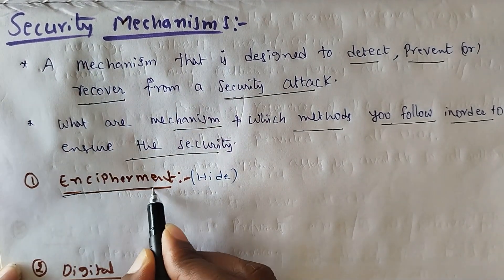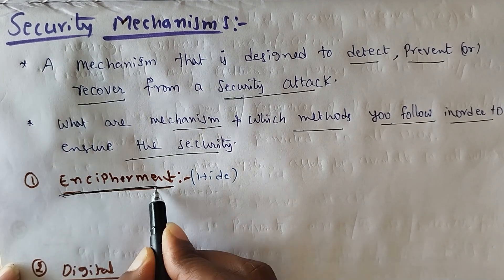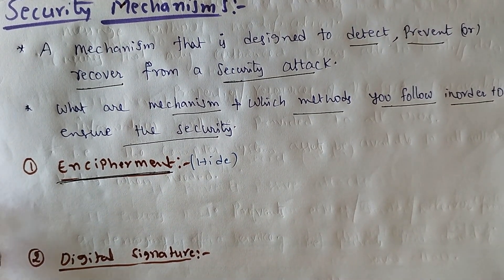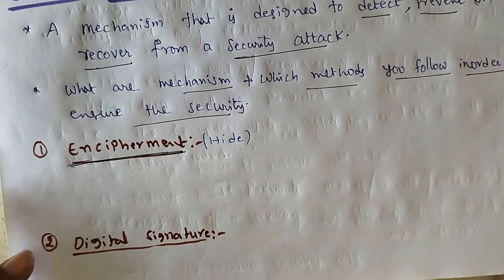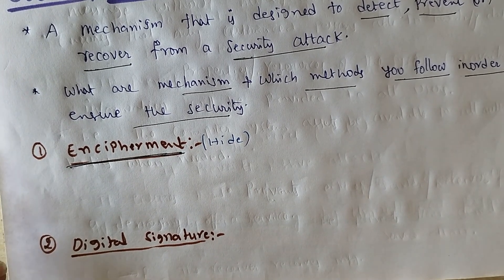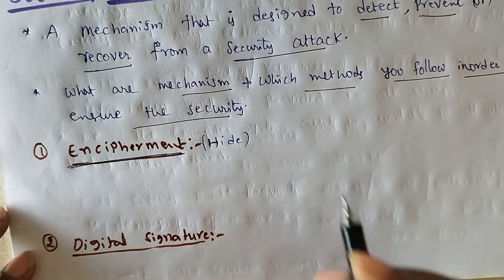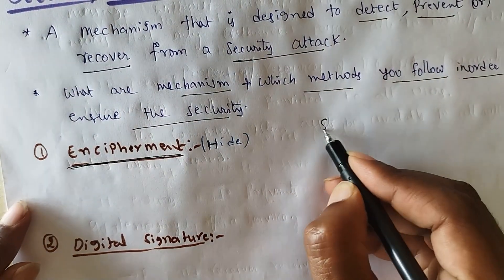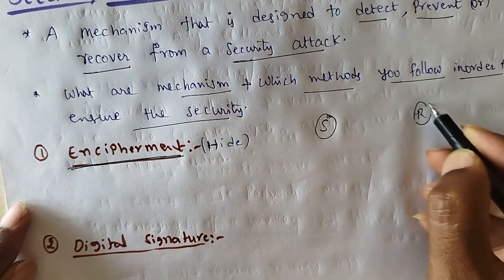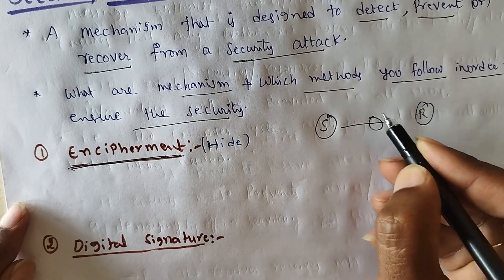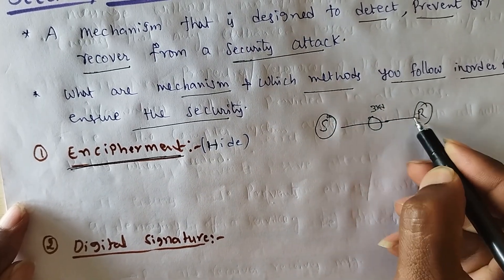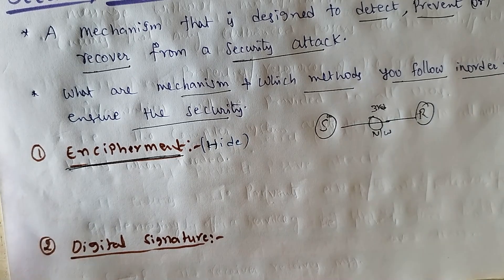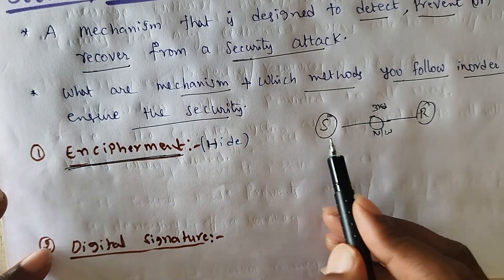The security mechanisms are of several types. The first one is encipherment. What is the meaning of encipherment? Encipherment is nothing but hiding the data — it is a very simple definition: hiding the information. In this method, the sender sends data to the receiver, and the data will be hidden while transferring over the network so that a third party will never see this data.